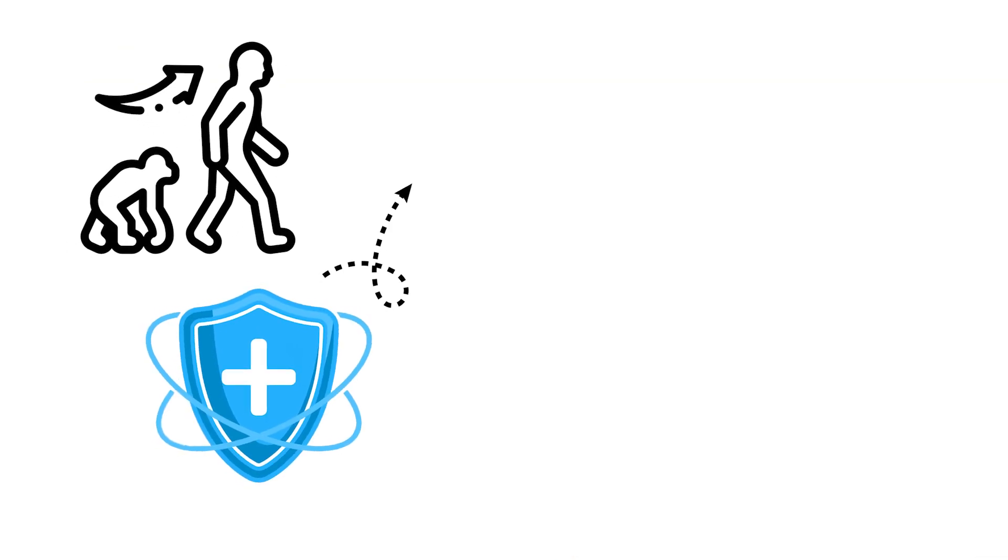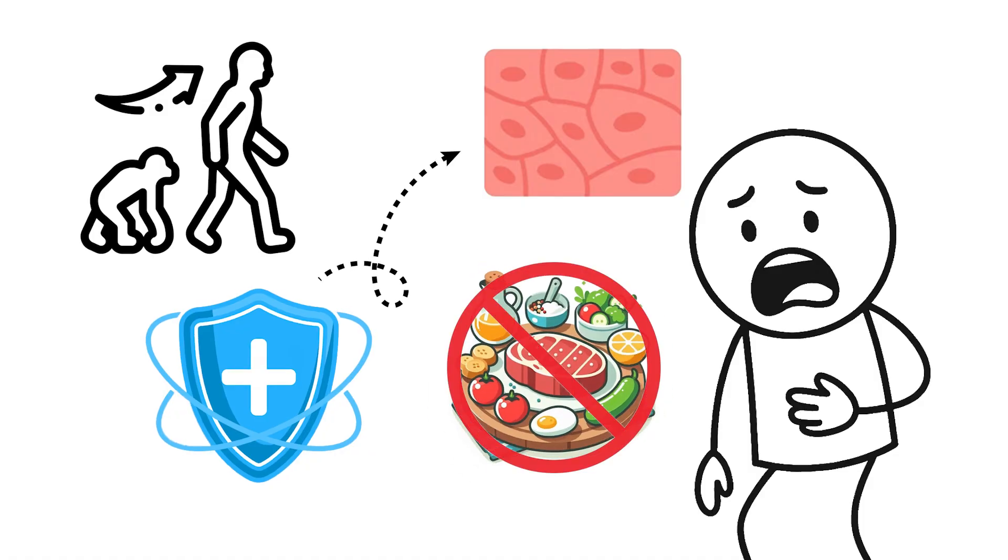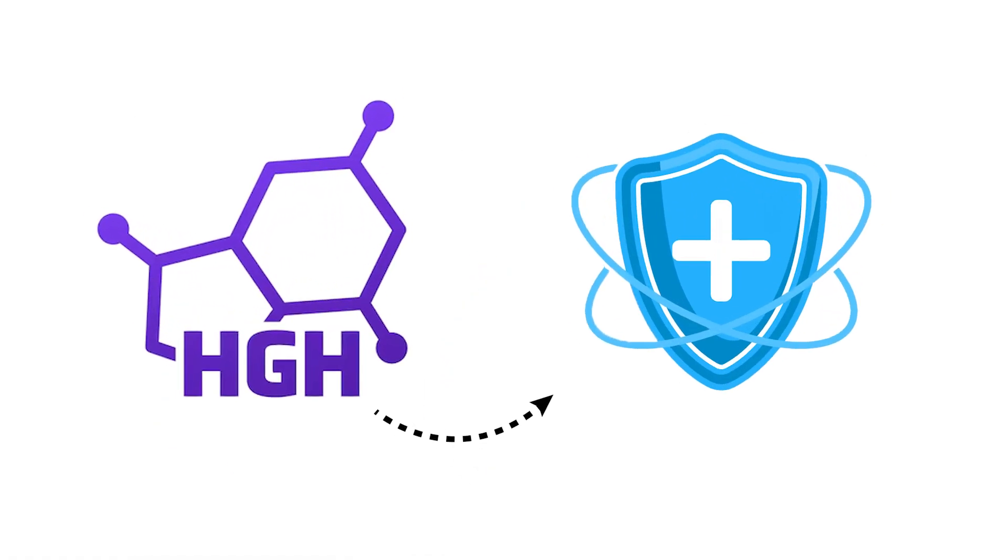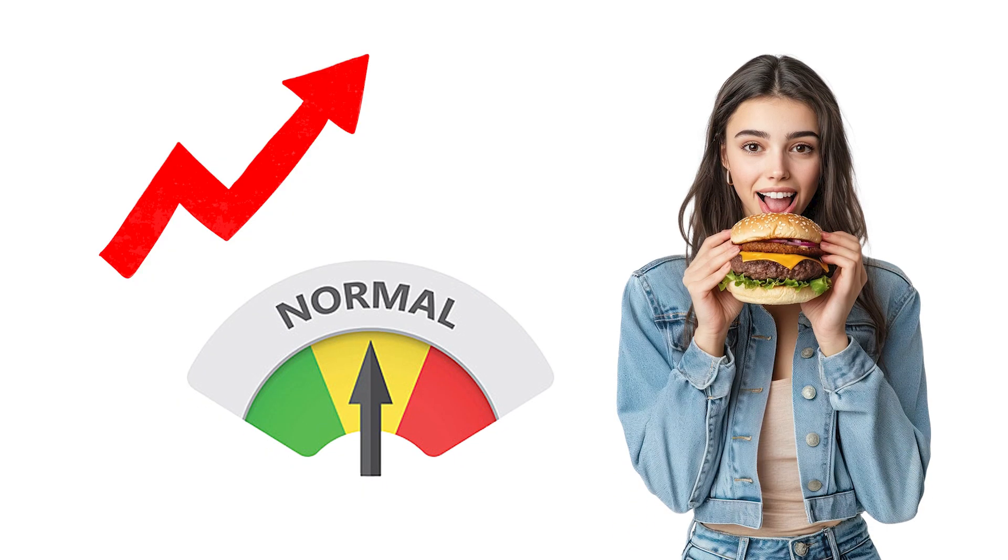This is why fasting doesn't lead to extreme muscle loss the way long-term dieting often can. Your body evolved to protect its most useful tissue during times without food, and HGH is part of that defense. The spike is temporary, and levels go back to normal once you eat, but the protective effect during the fasting window is real.